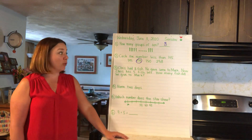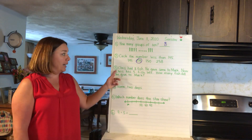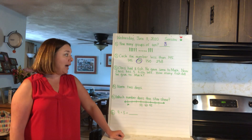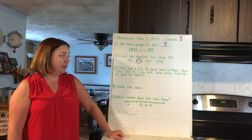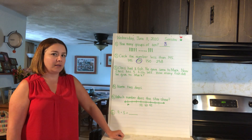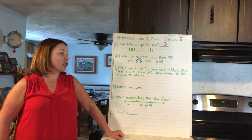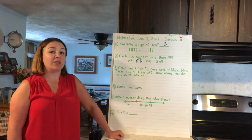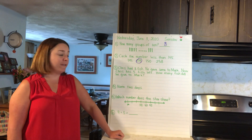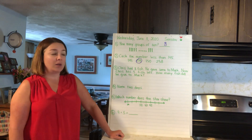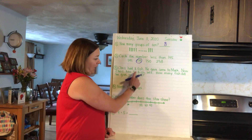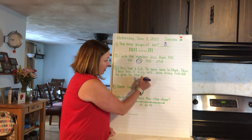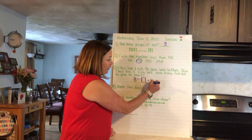Number three: Chris had eight fish. He gave some to Mark. Now Chris has five fish left. How many fish did he give to Mark? This number sentence can help you out — Chris had eight fish, he gave some away, so I'm going to use subtraction, and now he has five.